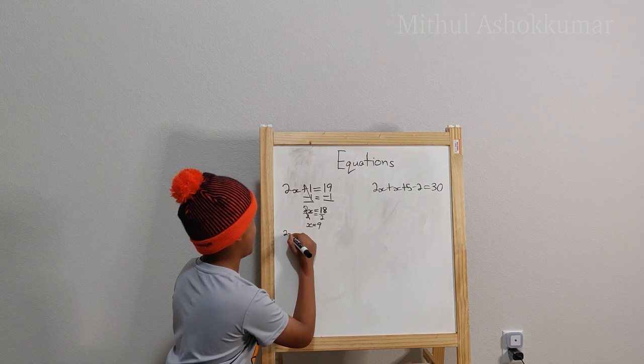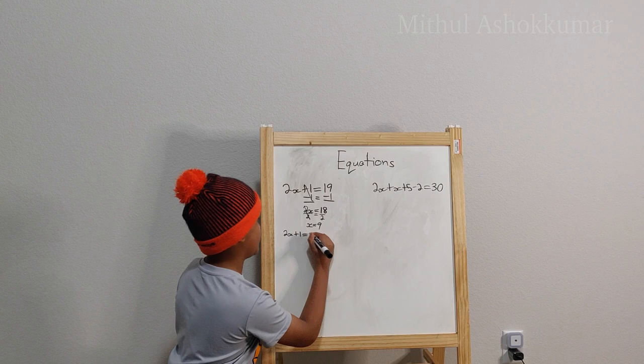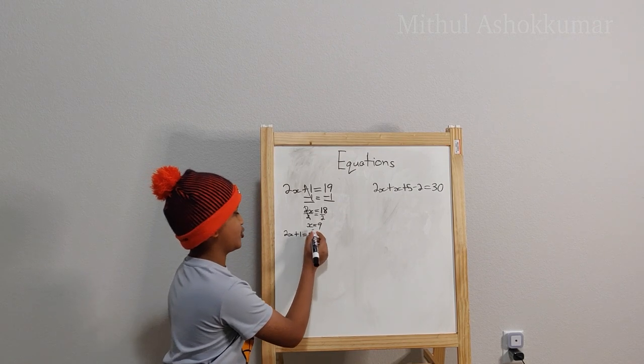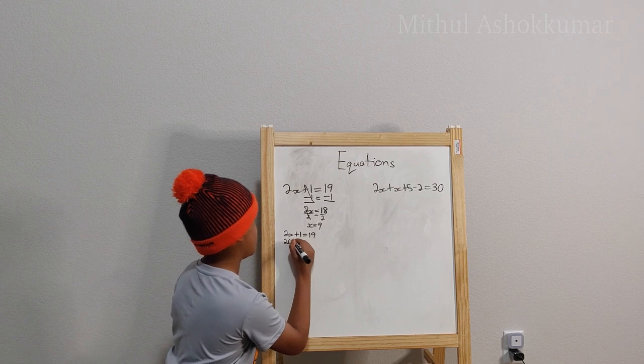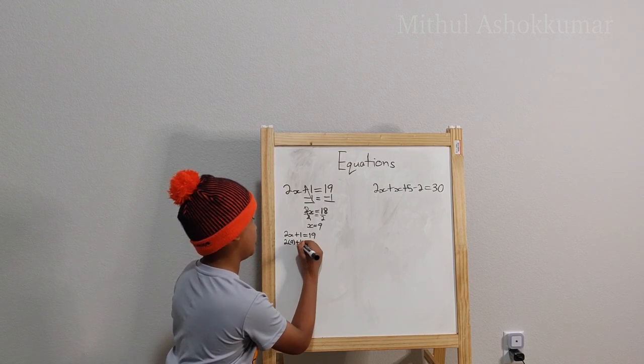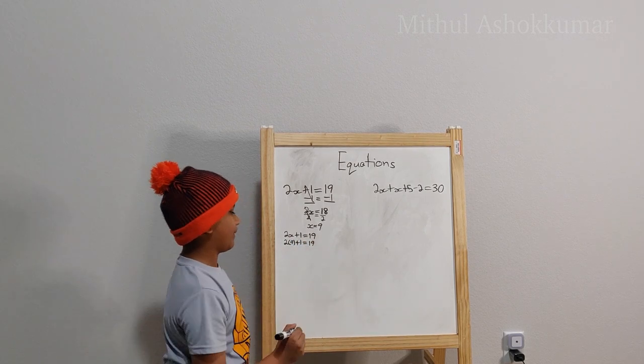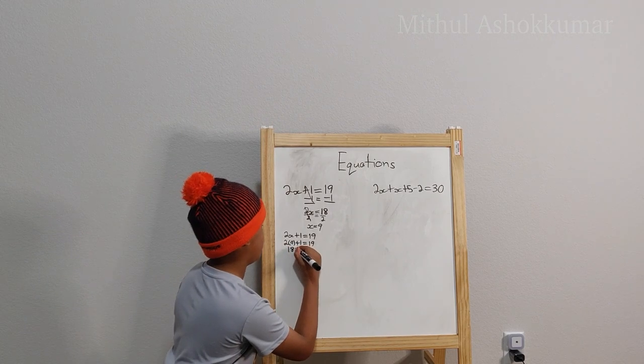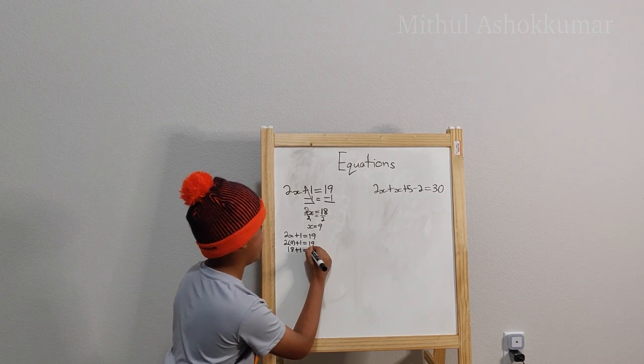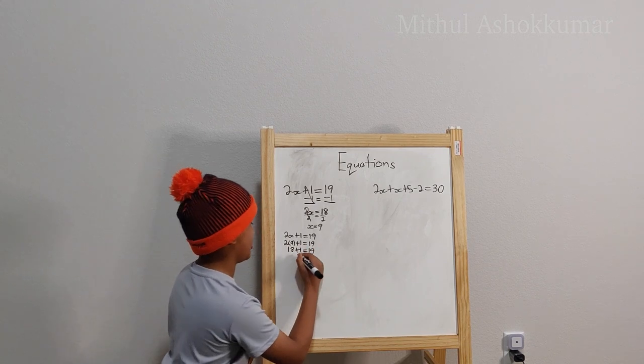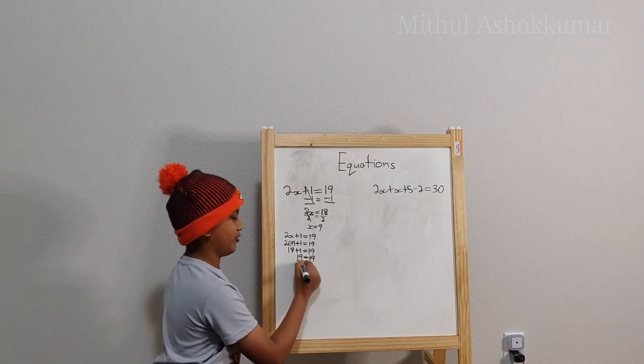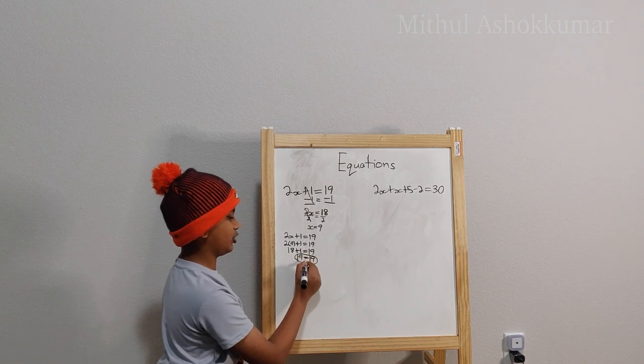So we have 2x plus 1 equals 19. And we know that value of x is 9 so we will do 2 times 9 plus 1 equals 19. So 2 times 9 is 18 plus 1 equals 19. So 18 plus 1 is 19 equals 19. So there you have it. Both sides of the equation are true.